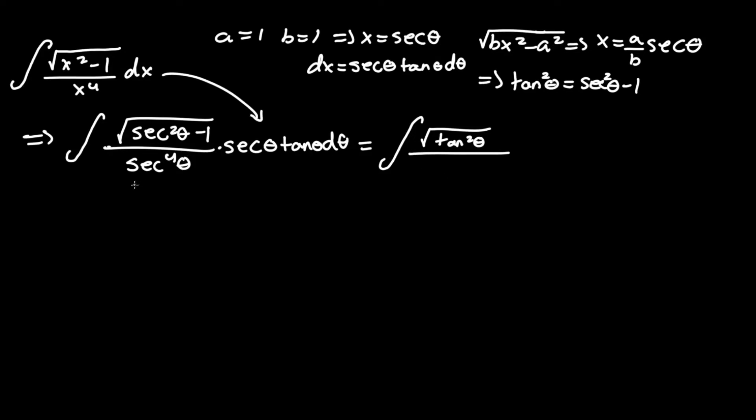And now we're setting this over secant to the 4th theta times secant theta. We can reduce the term here. That will become over secant cubed theta times tan theta d theta.